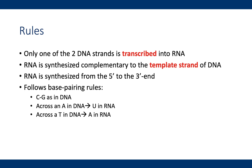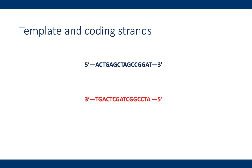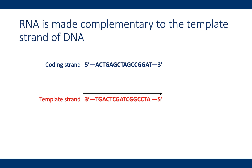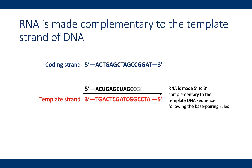Let's look at this a bit closer. RNA is made in the five prime to three prime direction, complementary to the template DNA strand, following the base pairing rules. The other DNA strand, which has nothing to do with the whole process of transcription, is called the coding strand. Hopefully the reason for this name will become clearer in a bit. Here you see RNA that runs five prime to three prime and is complementary to the DNA template strand.